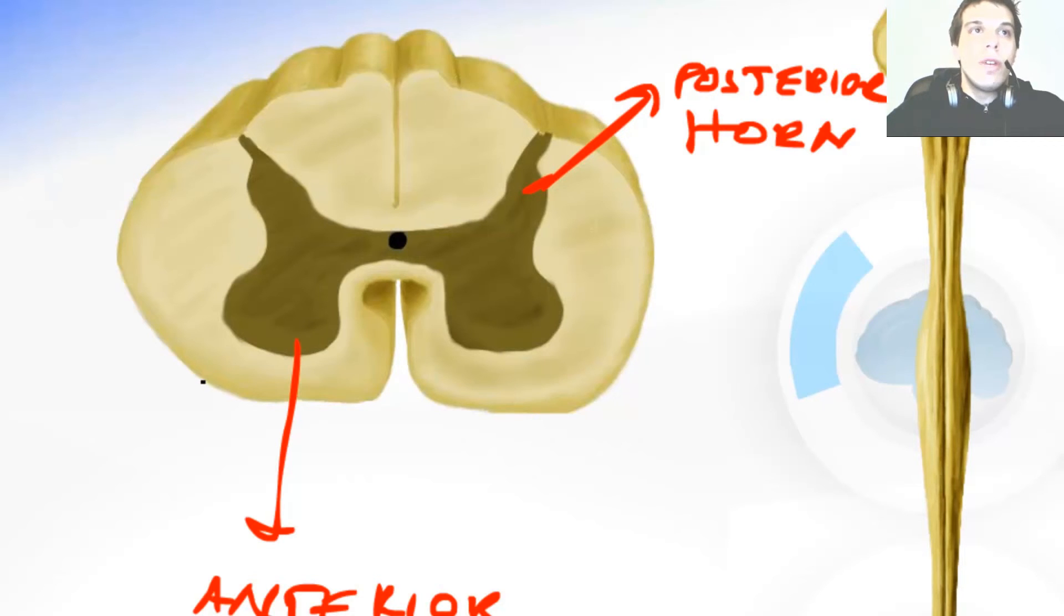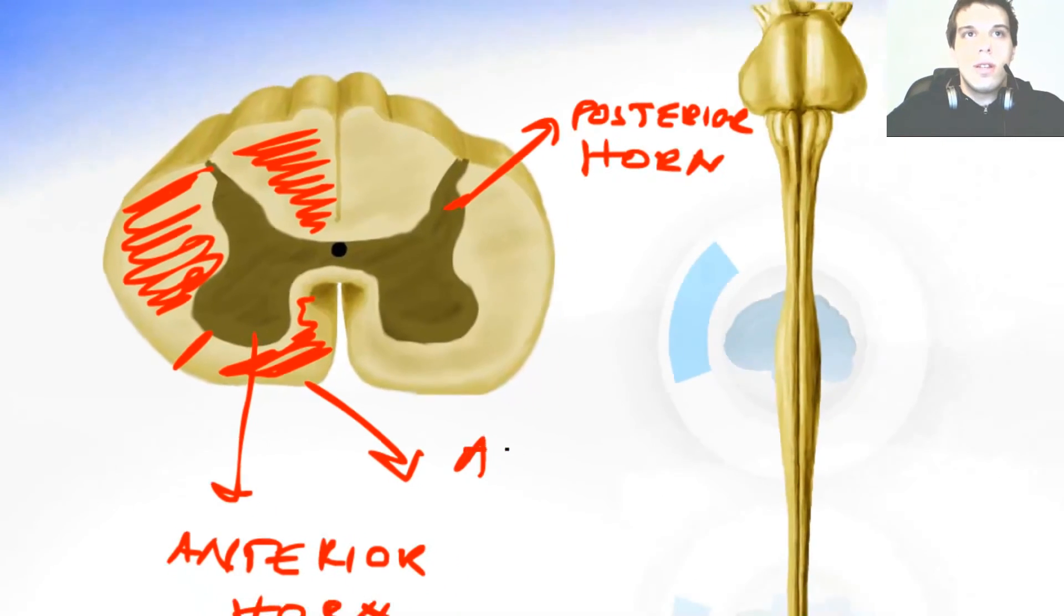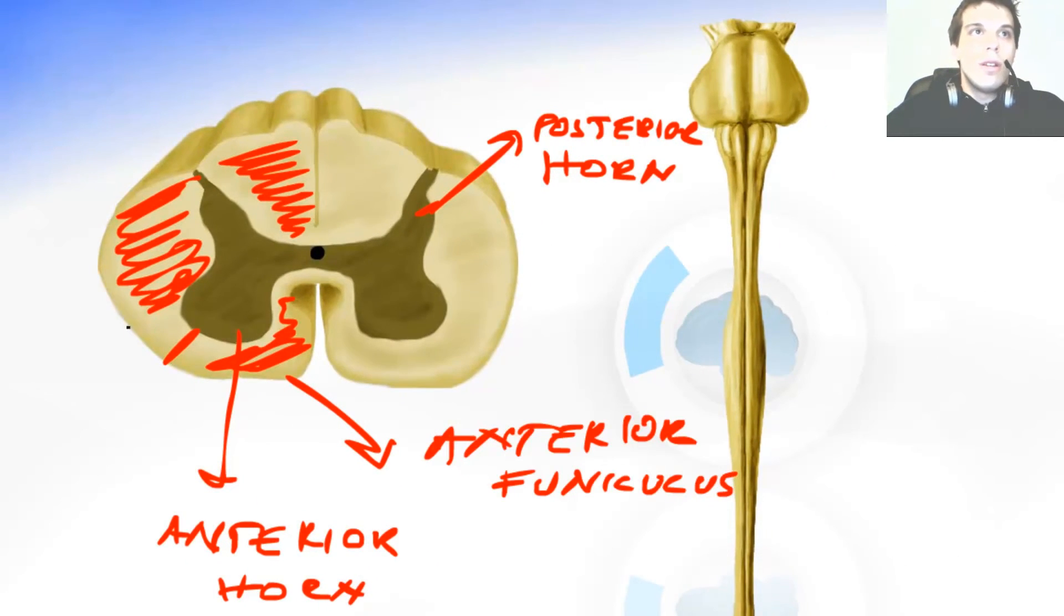Now in the white matter we can distinguish the lateral funiculus, the posterior funiculus and the anterior funiculus. This is the anterior funiculus. This is the lateral funiculus. And this over here is the posterior funiculus.